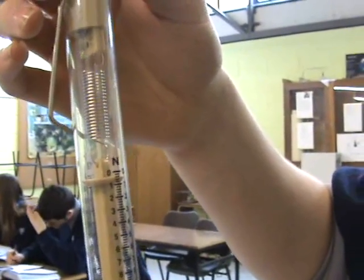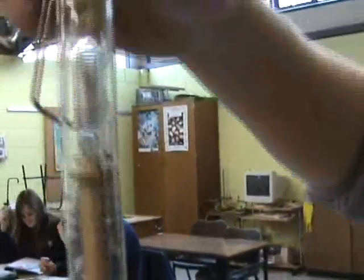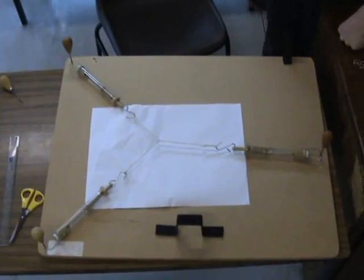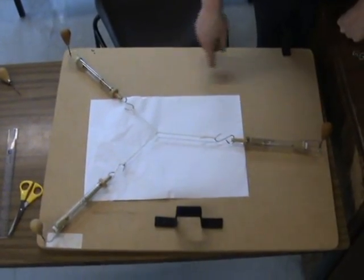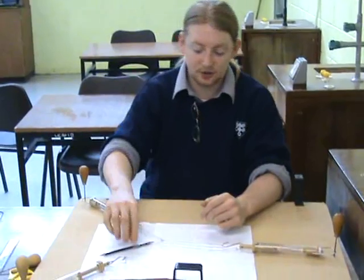Ensure the Newton balance reads zero, adjust if necessary. Tie a string to each Newton meter as shown and pin the Newton meters to the board. Carefully place the dot under the knot and under each string.